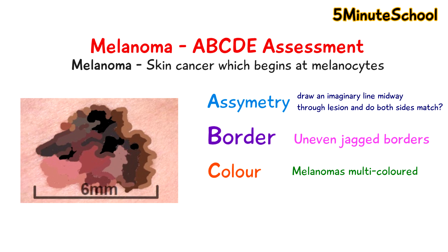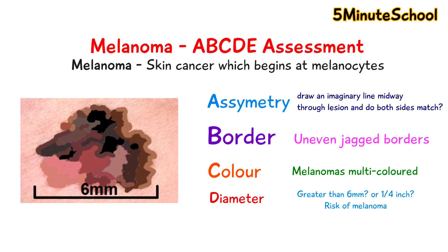D is for diameter. This is more to check for the size of the lesion. If it's greater than 6mm or a quarter of an inch in diameter, then this is a warning sign — that's about the size of a pencil eraser. While this is a clear warning sign, it's important not to ignore any lesion on your skin, even if it's small.